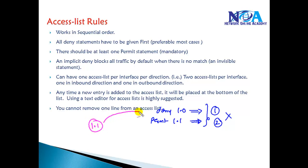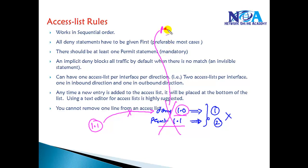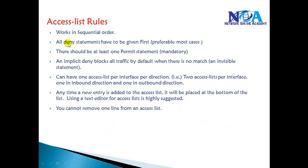The reason is: when a packet comes from 1.1, it matches the first statement because 1.1 falls under the 1.network category, and the traffic is simply dropped. Once it matches, it does not check the second statement. So in this scenario, the correct approach is to write permit 1.1 first, then deny 1.network. In most cases deny comes first, but not in all cases.